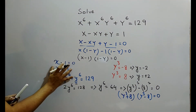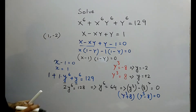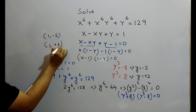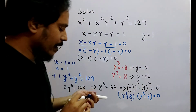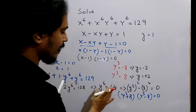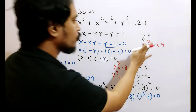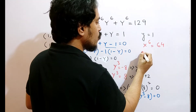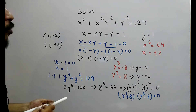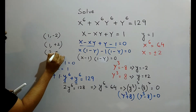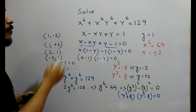So when x equals 1, we get two solutions: x equals 1 with y equals minus 2, and x equals 1 with y equals 2. Similarly, when y equals 1, we can find x to the power 6 equals 64, so the two real solutions of x will be plus or minus 2. This means when x equals plus 2, y equals 1, and when x equals minus 2, y equals 1. So these four are the real solutions of this question.